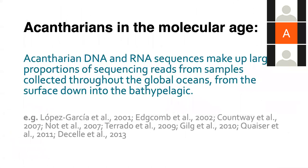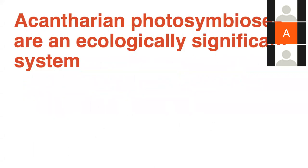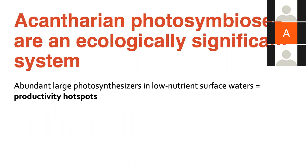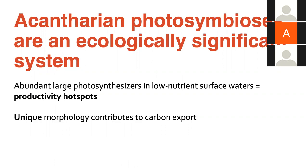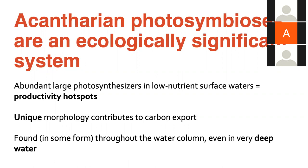In this molecular age, acantharians continue to be well represented in samples collected throughout the global ocean, from the surface all the way down to deep water. If anybody needed convincing, acantharian photosymbioses are an ecologically significant system. They are abundant large photosynthesizers in low-nutrient surface waters, making them productivity hotspots. Their unique morphology contributes to carbon export, and they're found at least in some form throughout the water column into very deep water.